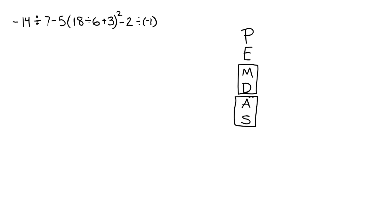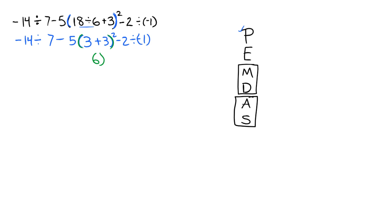So we start with our parentheses. We look in our parentheses and say, do we have any parentheses in the parentheses? No. Do we have any exponents inside the parentheses? No. Do we have any multiplication or division? Yes, we do — we have division right here. So we say 18 divided by 6 is 3, and then we drop everything else down. Nothing else should change when we're doing this, so make sure you copy it correctly. I've seen a lot of people where their subtraction signs start looking like multiplication signs. So then next, we need to add in our parentheses — 3 plus 3 is 6. Again, we drop everything else down.